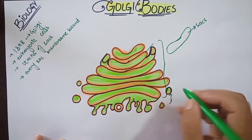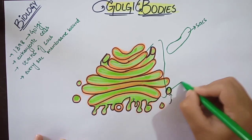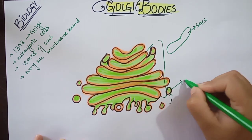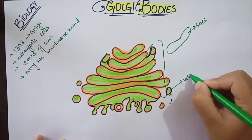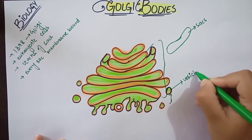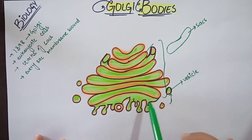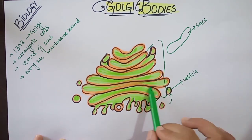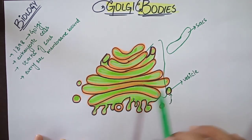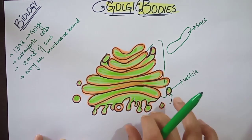These are vesicles. These vesicles are formed by the sacs — these sacs produce vesicles.